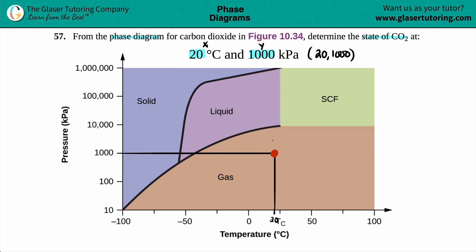We're in the brown phase, which is the gas phase. So at 20 degrees Celsius and 1000 kilopascals, carbon dioxide will be a gas — final answer. Let's color it in and call it a video.